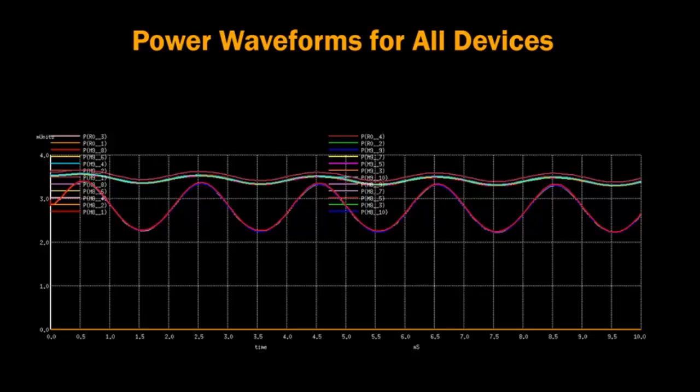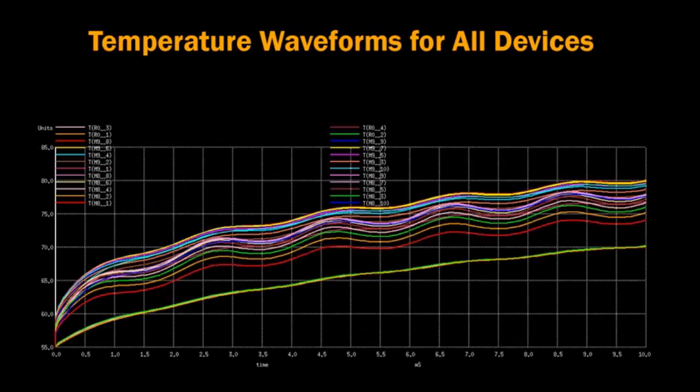Now, let's take a look at the simulated temperature waveforms of these devices. The millisecond scale power variations result in a fluctuating ramp-up in temperature. These waveforms show a distinct, time-varying temperature for each device. This is quite different from the constant, uniform temperature which is typically used in circuit simulation.